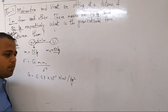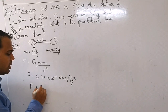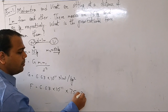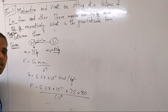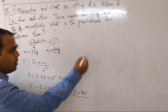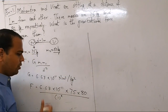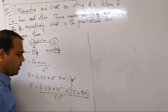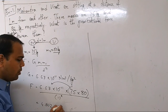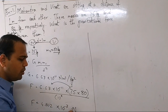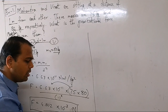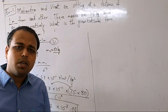G = 6.67 × 10⁻¹¹, m1 = 75, m2 = 80, divided by d = 1, so d² = 1. Solving this multiplication, the equation gives 4.002 × 10⁻⁷ Newton. Remember, when you do a numerical, writing the unit is compulsory. If you write the unit, you will get marks. So this is numerical one.